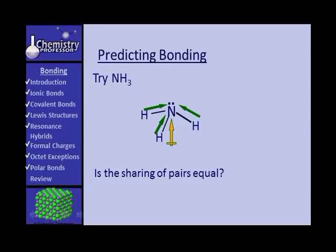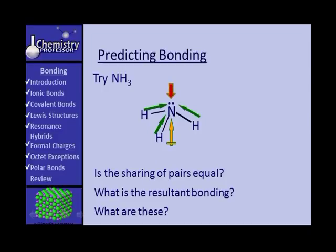Well, if you can, then what does that tell you about the bonding? What is the resultant bonding? And the resultant bonding is polar covalent. Polar covalent. Got the idea? What are these? Yeah, you know what they are. They are lone pair electrons.